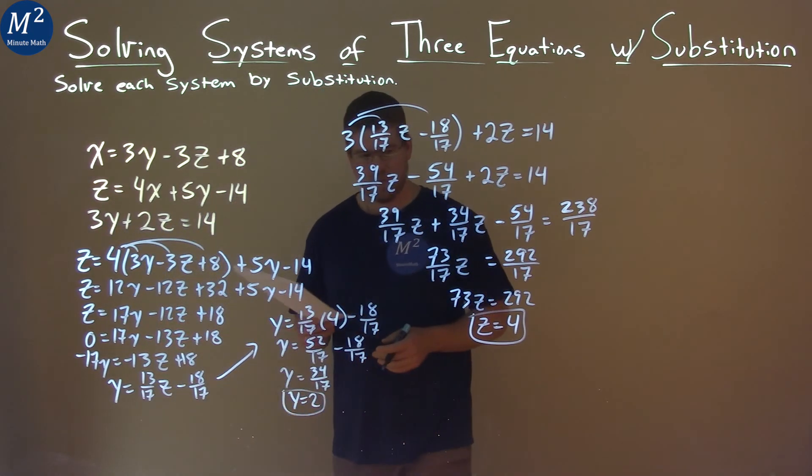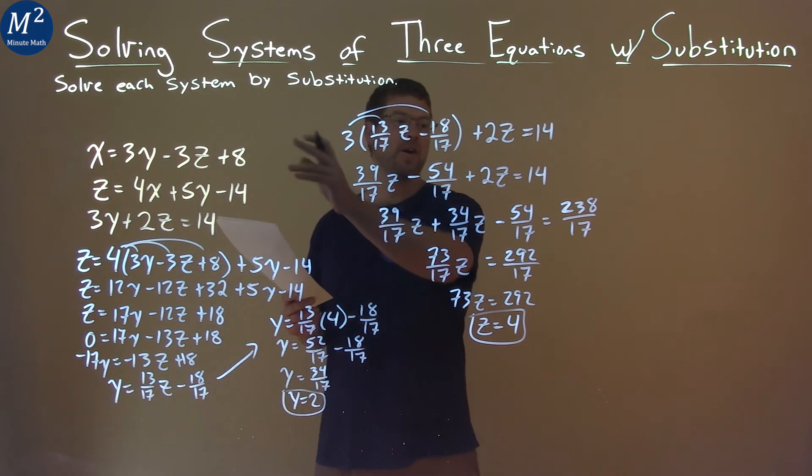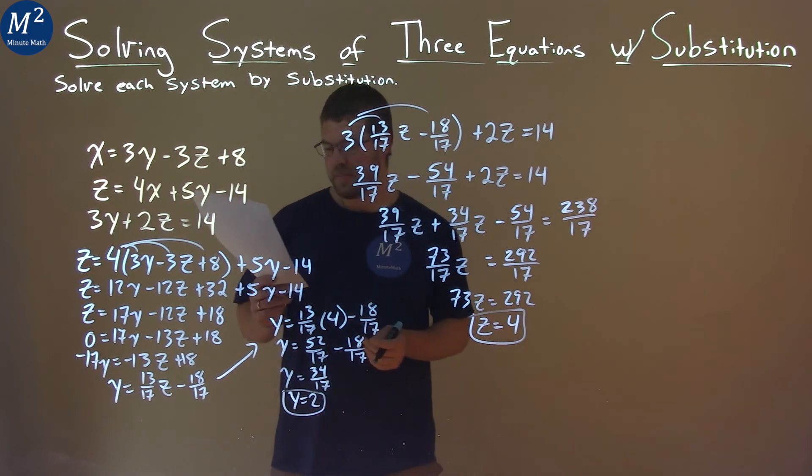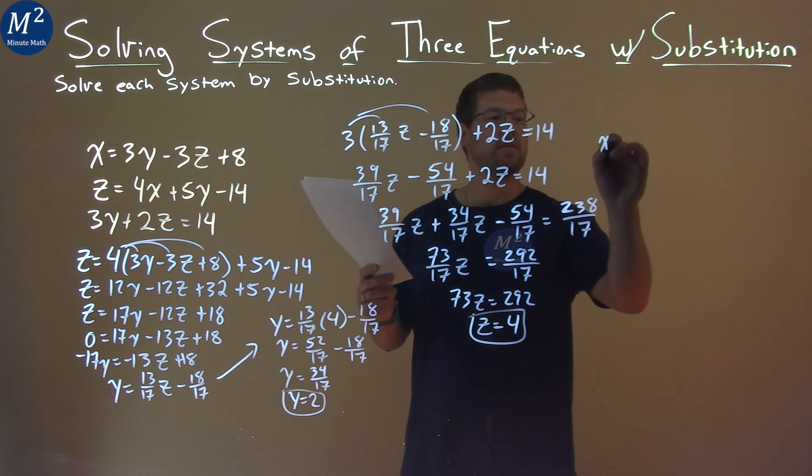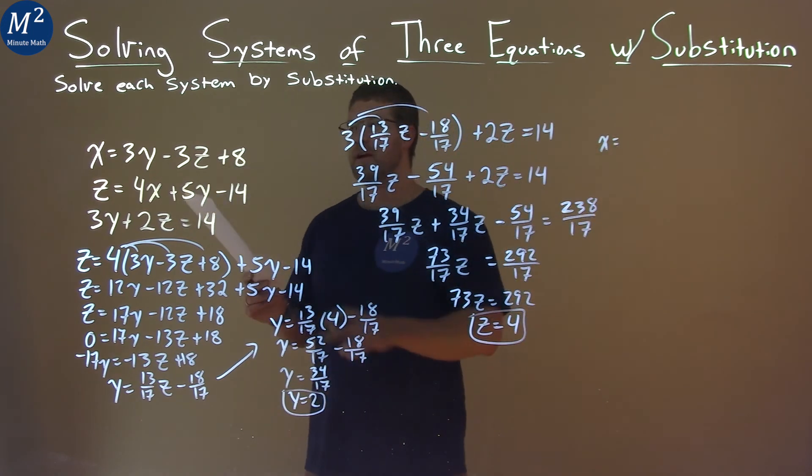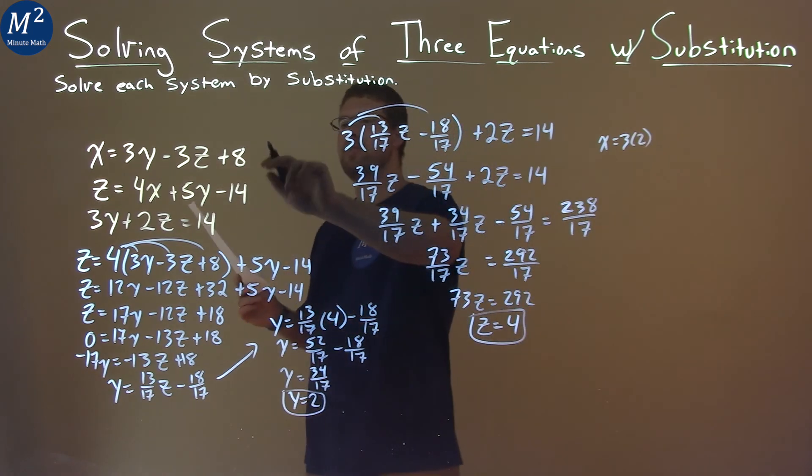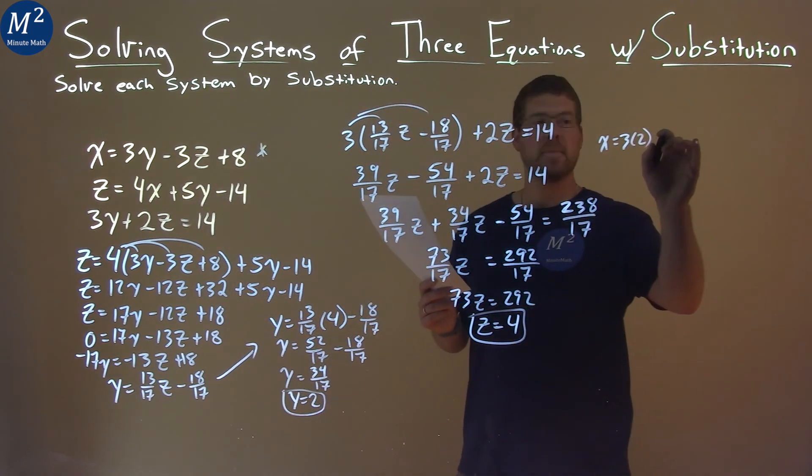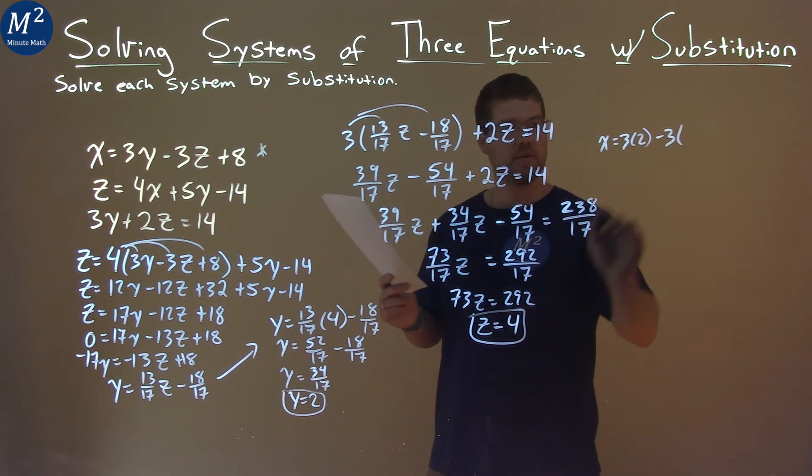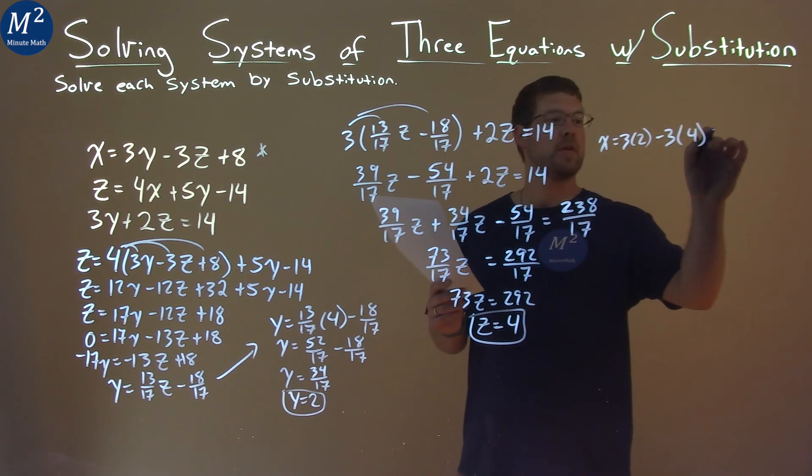So, we have y equals 2 now, z equals 4. Let's go find our x. And that involves the first equation here. We have x equals, okay? And I'm going to plug in, well, 2 for y. So, we have 3 times 2. Again, that first equation right here. 3 times 2 minus 3 times our z value, which is 4, plus 8.